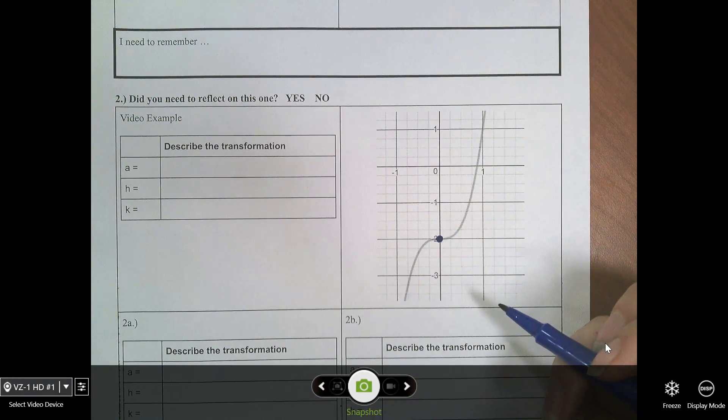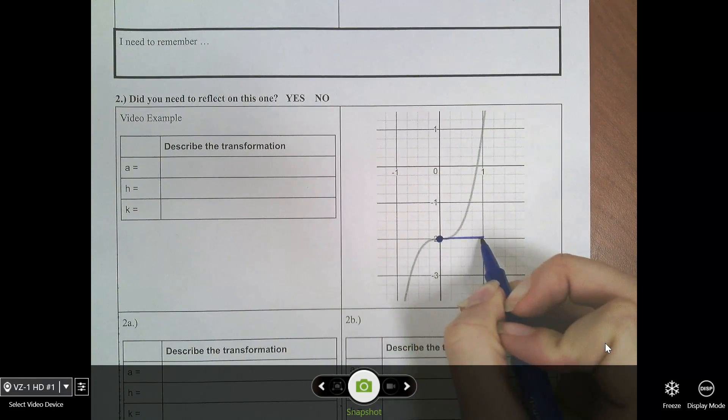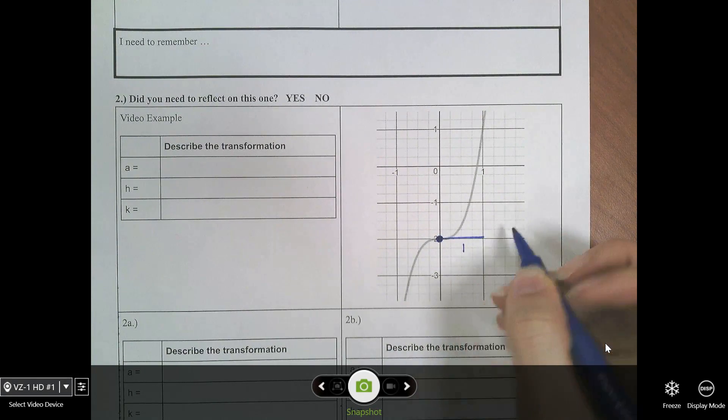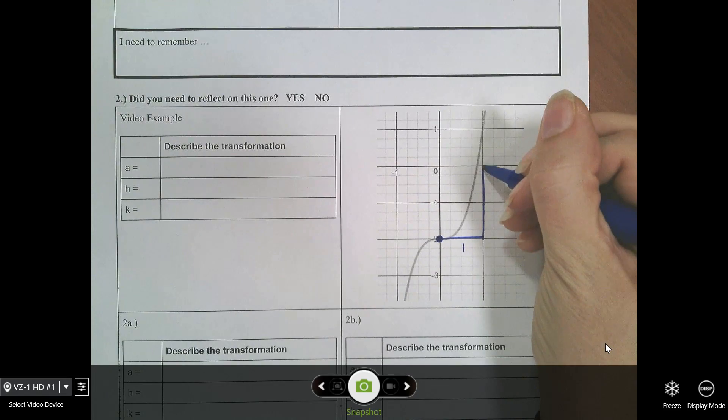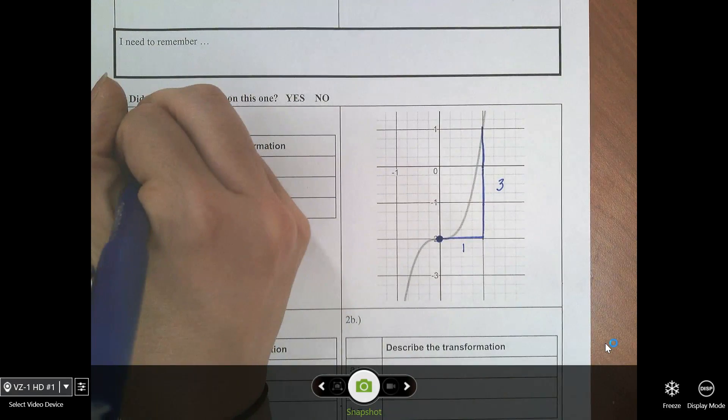And again, if you look at the notes, it tells you to move right one. And remember, you're moving one whole, not just one little box, one whole. And then we're going to move up one, two, three.